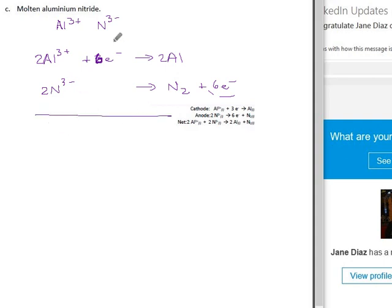And we get, skip the electrons, 2Al³⁺—I'm sorry, that's capital A—and two nitrides produces two aluminum atoms and a nitrogen molecule. So that's our net reaction.